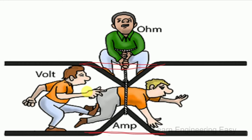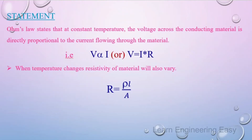So voltage and current are directly proportional. If the voltage is increased, the current increases. If the voltage is decreased, the current decreases. But the resistance is the constant factor in this relationship.